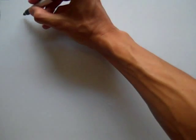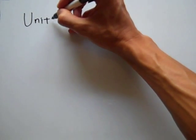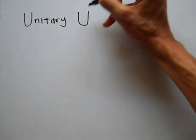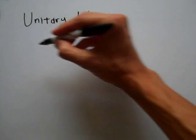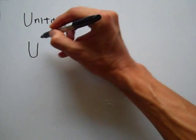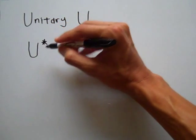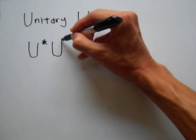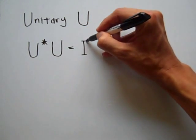I'm going to talk about unitary matrices. Suppose I have a unitary matrix U. Remember that to be unitary, the conjugate transpose of U, sometimes called U star, times U must be equal to the identity matrix I.